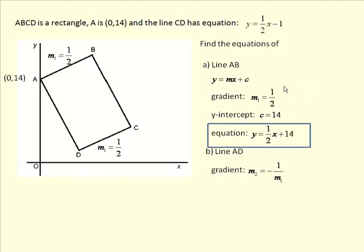What about line AD, though? Well, this is a rectangle, and so the lines are perpendicular to each other. They're a rectangle, right angles between all the sides.